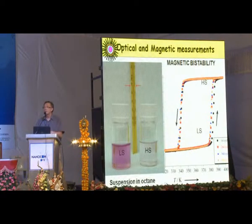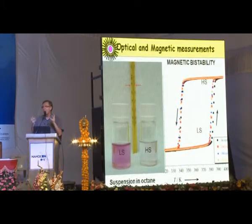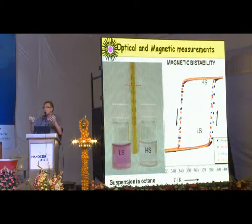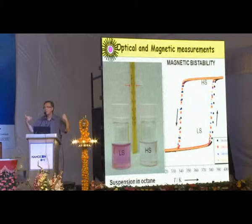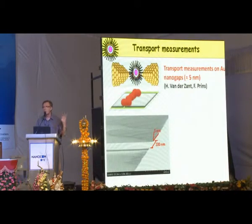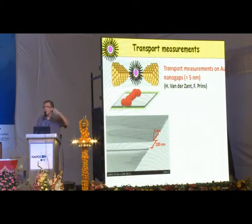A suspension of these nanoparticles can simultaneously contain particles in the low spin (violet) and high spin (colorless) states, making it ideal for demonstrating memory effects. To make a spintronic device, we need to connect the nanoparticles to electrodes and see whether the low spin / high spin configuration also produces a difference in conductance. In collaboration with a group in Delft, we used the electromigration technique to produce two electrodes with a gap of about five nanometers.